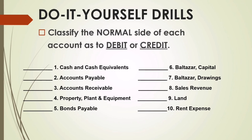Number nine: land is classified as an asset, and the normal side of asset is debit — so the answer for number nine is debit. Number ten: rent expense is categorized under expenses, and the normal side of expense is debit, so the answer for number ten is debit.